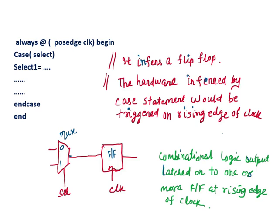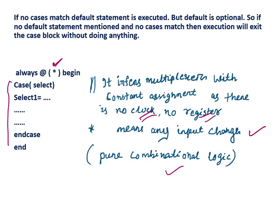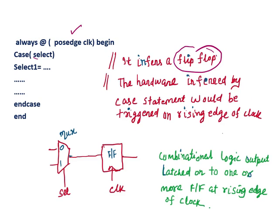Always at the positive edge of clock begin, case select, then select one, then select two, then end case end. Here there is a positive edge of clock, so it is a sequential logic. Because this clock enforces a sequential logic — it enforces a flip-flop. In the first example we did not have any clock, so it is a pure combinational circuit. Here we have clock, so it enforces a flip-flop. Case statement — this one is a flip-flop, this is sequential logic. Then case select — this is a multiplexer, this is a MUX.